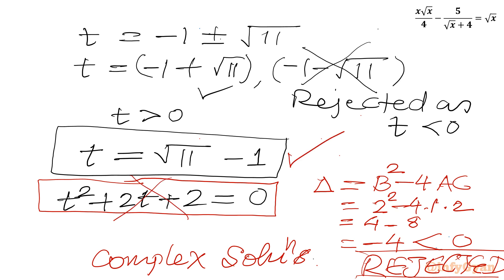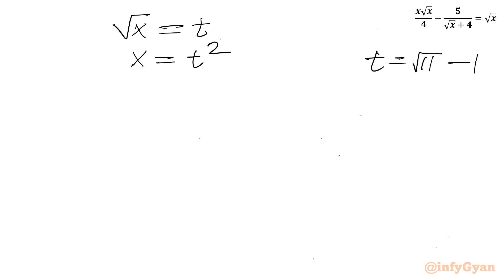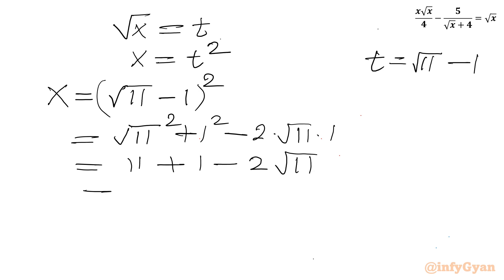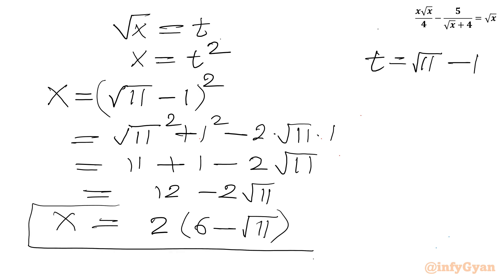So only one solution is accepted: t = √11 − 1. Since our substitution was √x = t, we have x = t². Squaring (√11 − 1): 11 + 1 − 2√11 = 12 − 2√11 = 2(6 − √11). So x = 2(6 − √11) is the only real solution for this rational equation.